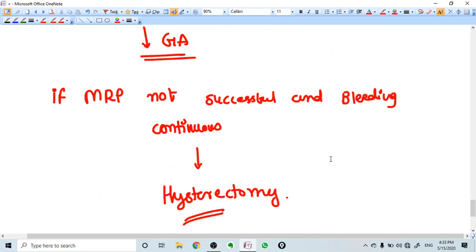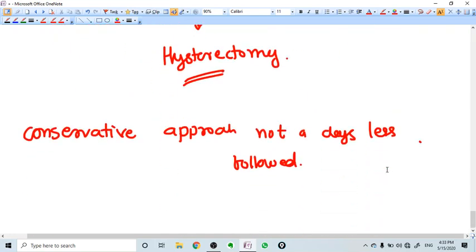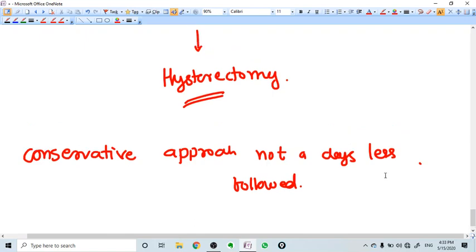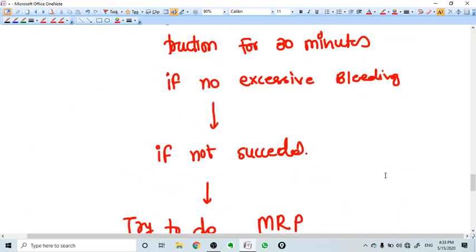And if this MRP is even not successful and bleeding continues, we don't have any option rather than hysterectomy. There is a conservative approach in which the placenta is left behind and just doing serial USGs and giving antibiotics to allow autolysis. But most of the time this pathway is not followed. Instead, hysterectomy is done directly in case of morbidly adherent placenta. Thank you for listening.